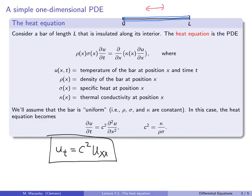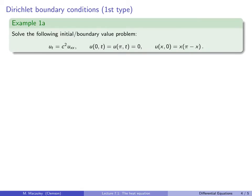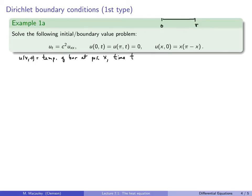Over the next few lectures we're going to do a series of examples, changing one thing at a time to see how it changes the model or the solution. Here's example 1A — the only one in this lecture. Consider the following initial/boundary value problem for the heat equation in one dimension. We have a bar of length π, and u(x, t) is the temperature of the bar at position x and time t.